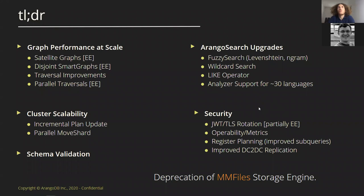The TL;DR — if you're here just to learn about the features you can basically drop off after this slide, though I wouldn't recommend it. In 3.7 the biggest category is graph performance at scale. More and more people are coming to us running into graph problems requiring more than one node, and in 3.7 we added features addressing exactly those needs.